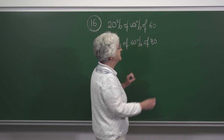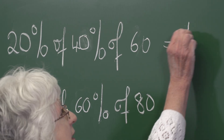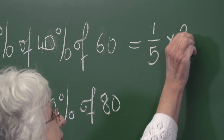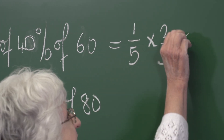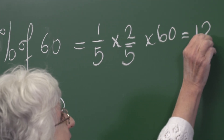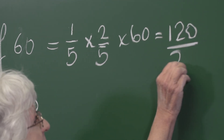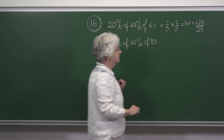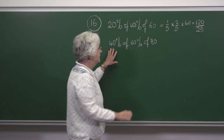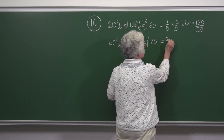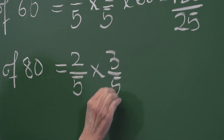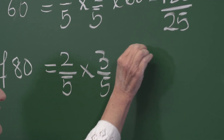That means that 20% of 40% of 60 is one-fifth times two-fifths of 60, which is 120 over 25. In the same way, we have two-fifths of three-fifths of 80.